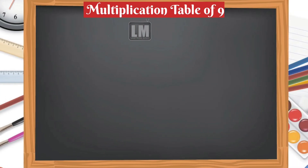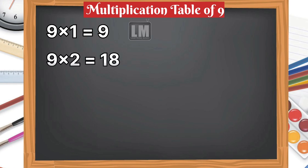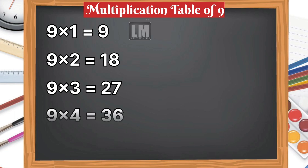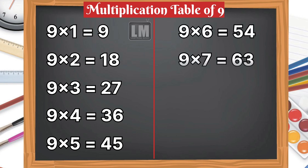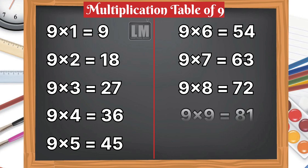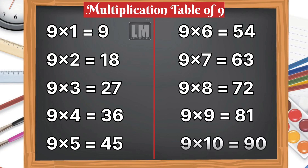Multiplication table of 9. 9 1s are 9, 9 2s are 18, 9 3s are 27, 9 4s are 36, 9 5s are 45, 9 6s are 54, 9 7s are 63, 9 8s are 72, 9 9s are 81, 9 10s are 90.